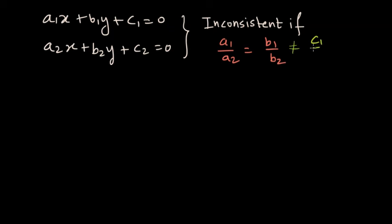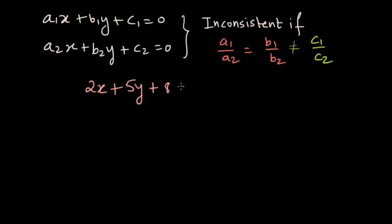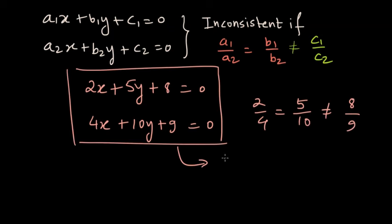But at the same time, a1 by a2 must not be equal to c1 by c2. If c1 and c2 are the same, both lines are one and the same — they overlap and are no longer parallel; there will be a single line. So for the two lines to be parallel, or the simultaneous equations to be inconsistent, a1 by a2 equals b1 by b2, but it should not equal c1 by c2. An example is 2x plus 5y plus 8 equals 0 and 4x plus 10y plus 9 equals 0, where 2 by 4 equals 5 by 10, but is not equal to 8 by 9 — so the equations are inconsistent.